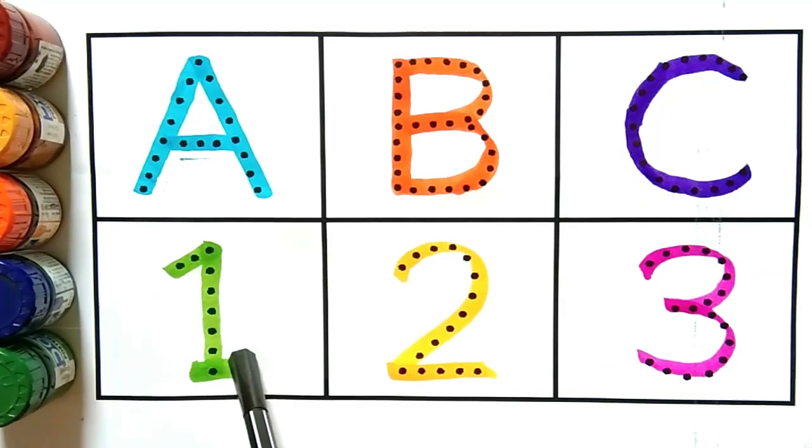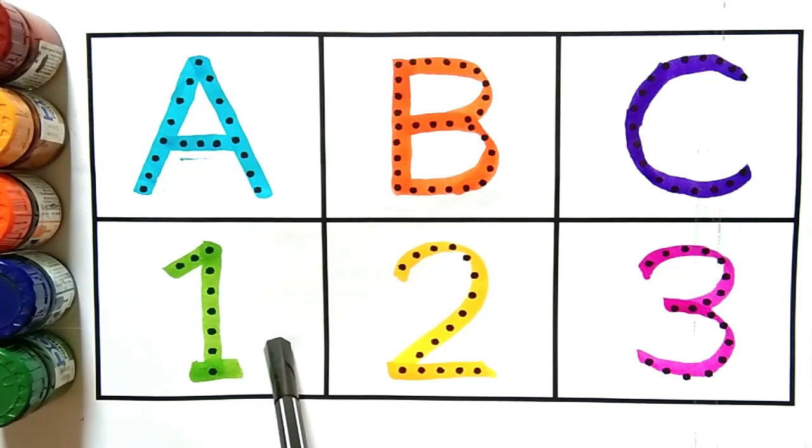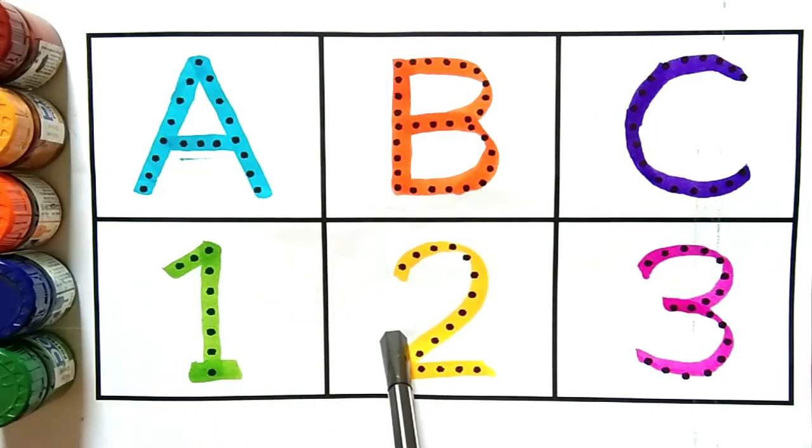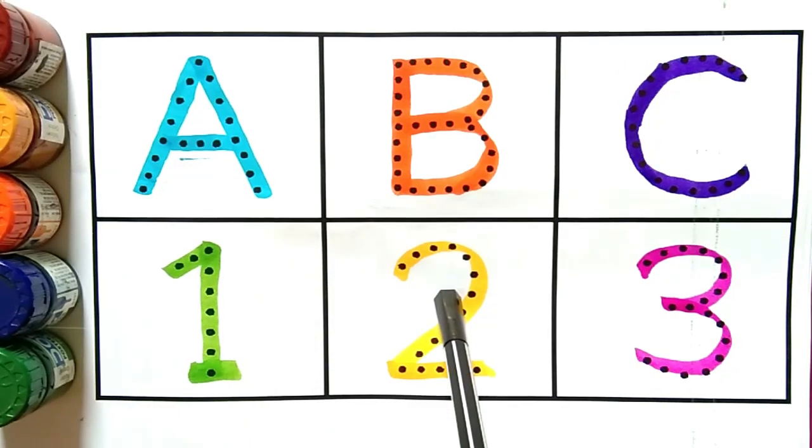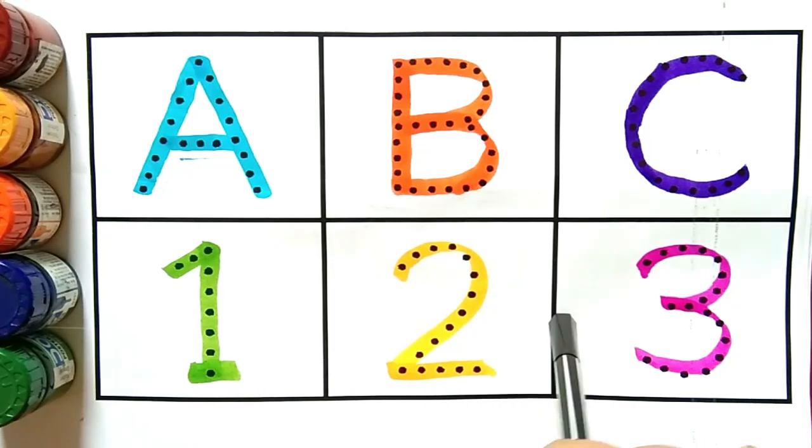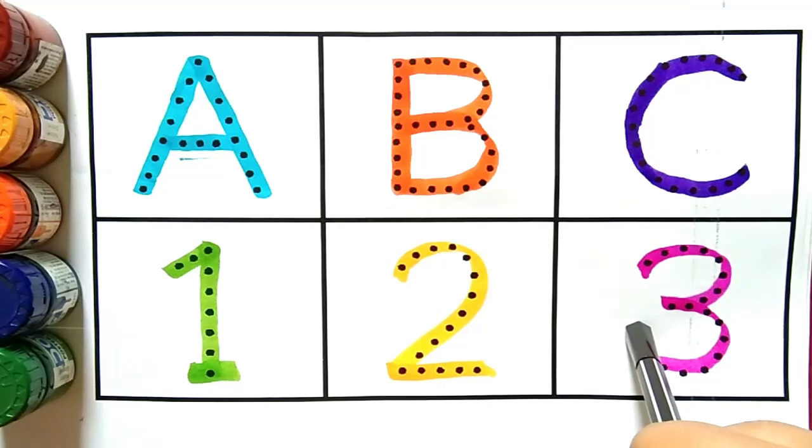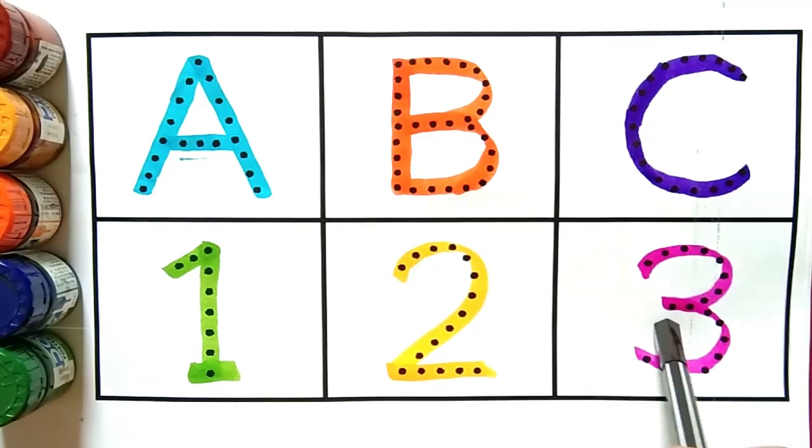Yeh hai number one. Kya hai kids, yeh hai number one. One ke baad aata hai Two. Kya hai kids, yeh hai number two. Two ke baad aata hai Three. Yeh hai number three. Kya hai kids, yeh hai number three.